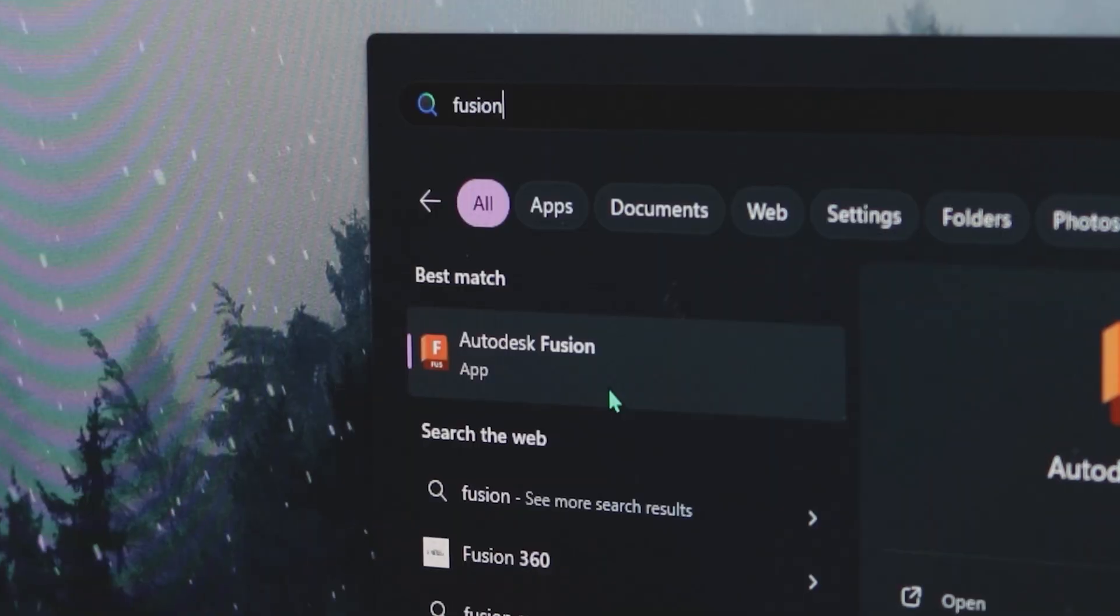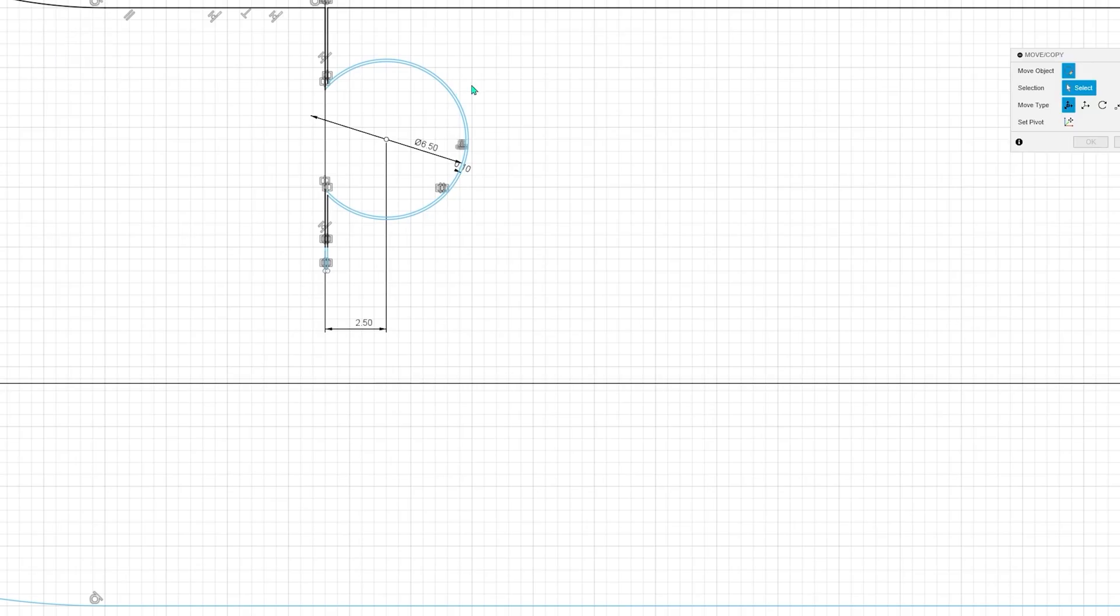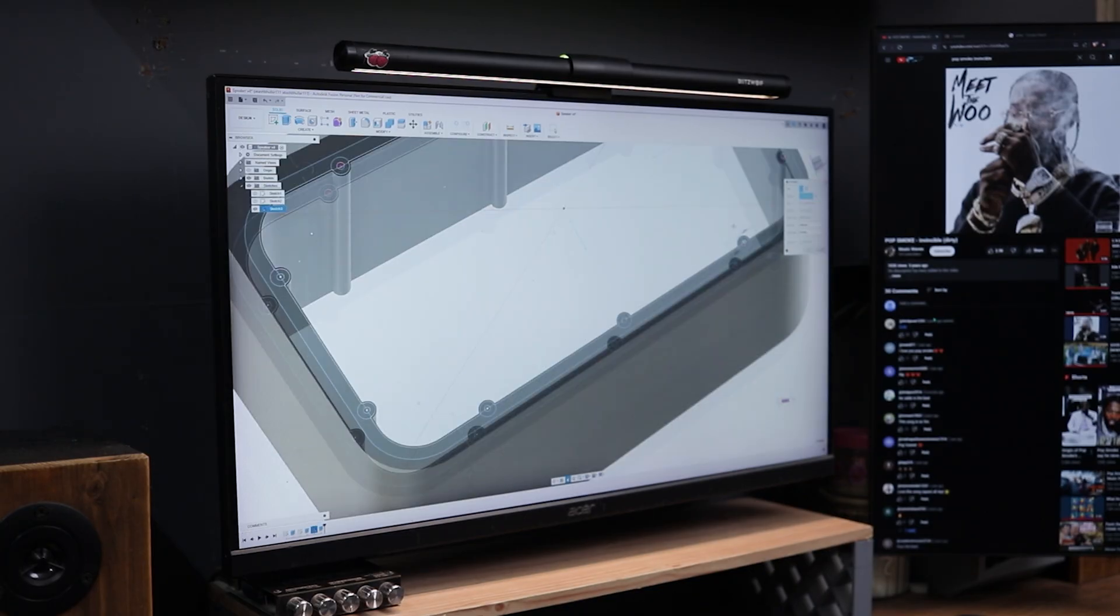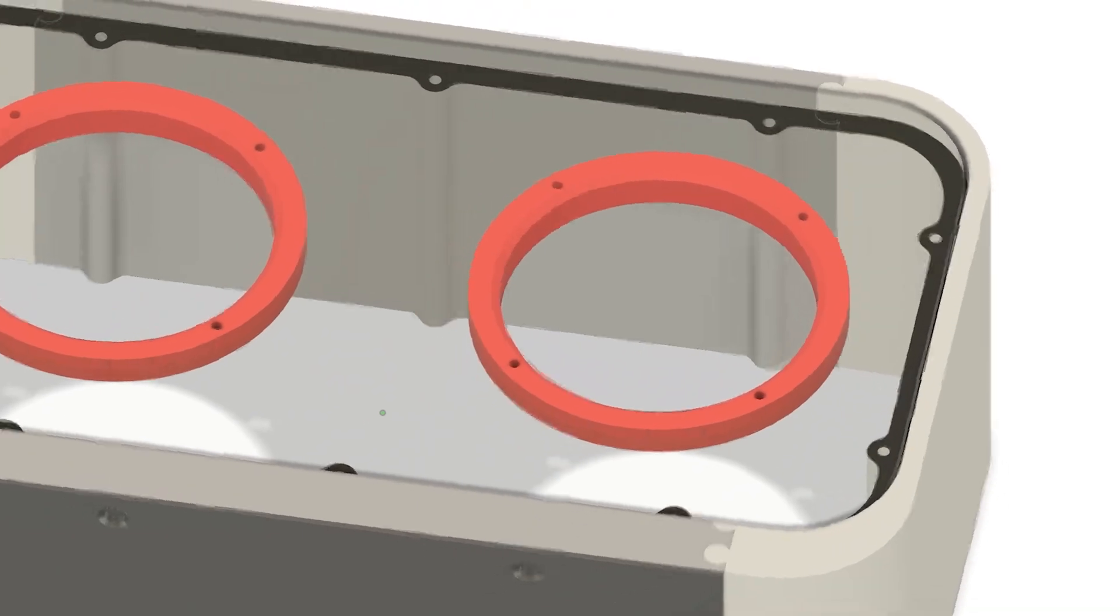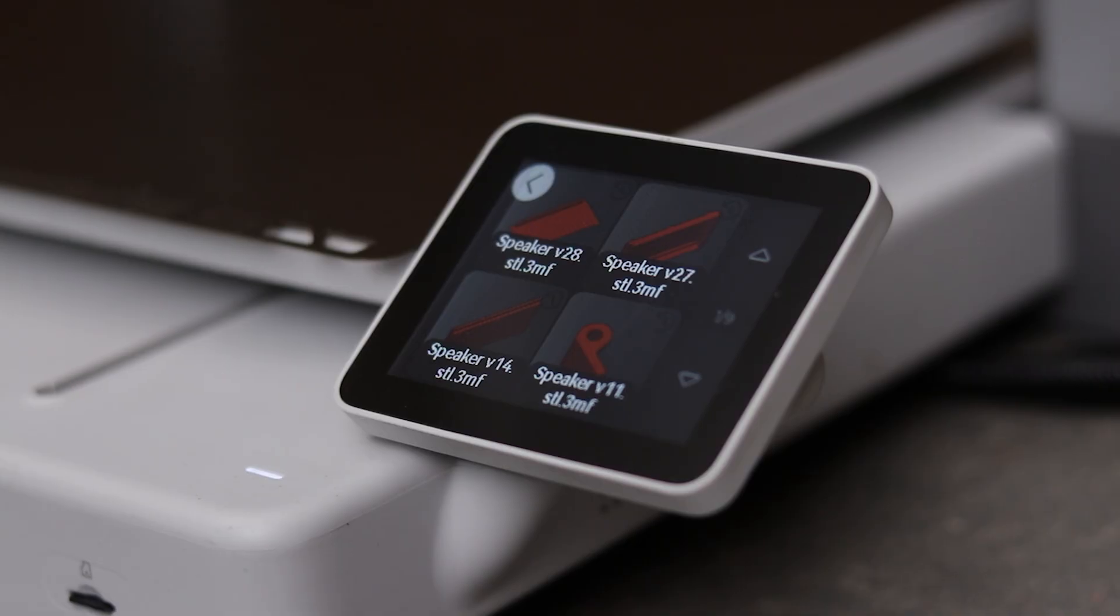First things first, I fired up Fusion 360 to design this speaker. I'm actually making it for my sister and she specifically wanted a white and grey color scheme to match her room's aesthetics. The design is ready, it's looking pretty clean and modern, so let's slice it and send it to my 3D printer.